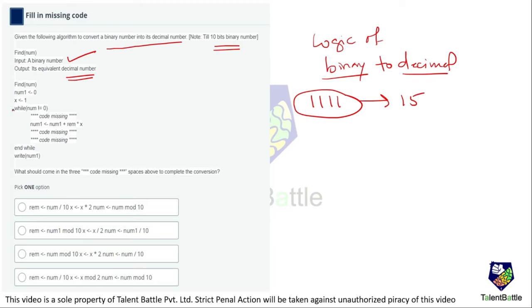The given algorithm starts with a function where the first step assigns 0 to num1 and 1 to x, then checks the condition while num is not equal to zero. There are three missing code statements, and in between we have num1 = num1 + remainder * x. At the end of the while loop it returns the updated value of num1.